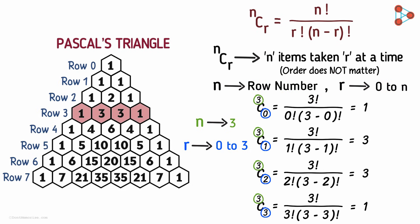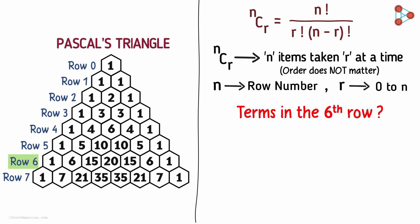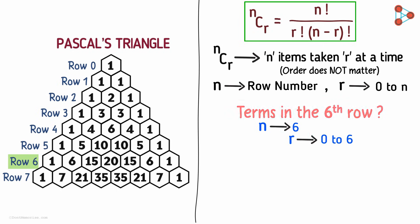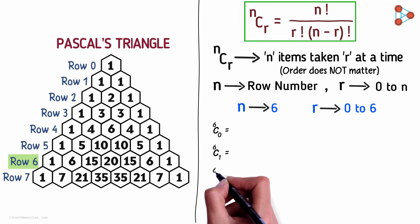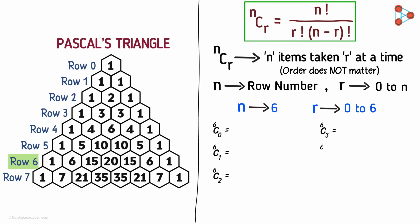What if we want to find the terms in the sixth row of Pascal's triangle? We know the relation between combinations and each term, so let's use that. Here, n will be equal to 6 and r will take values from 0 to 6. By using the formula of combinations, we find the values of 6C0, 6C1, 6C2, and so on up to 6C6.